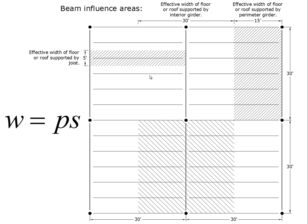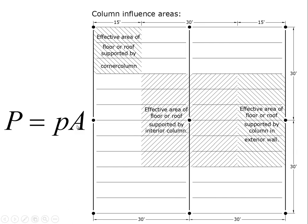Previously we had a video where we described the portions of the floor associated with each beam. For example, a joist has a 5-foot wide swath of floor, a perimeter girder has a 15-foot wide swath, and an interior girder has a 30-foot wide swath. We applied the formula W equals p times S.